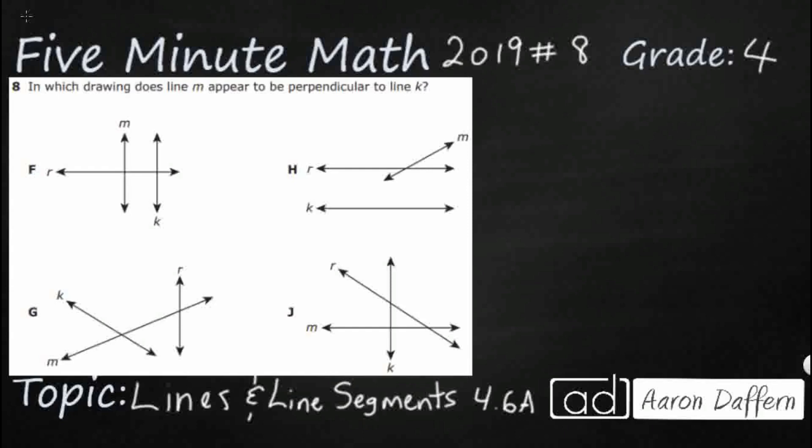So we have four different drawings here: F, G, H, and J, and we're looking for line M to be perpendicular to line K.